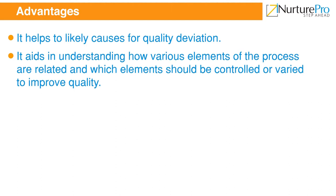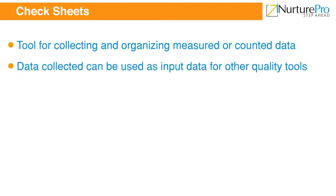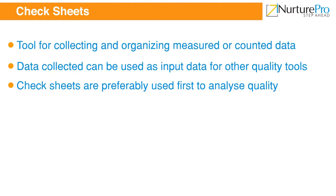Check sheets are another basic quality control tool, also known as data collection sheets and tally charts. They are used to collect data such as frequency of occurrence of a defect or event and service characteristics manually. The data can be used to create Pareto diagrams, quality control charts, and histograms. This aids in finding the pattern or trend of quality issues. Check sheets are preferably used first to analyze quality problems.